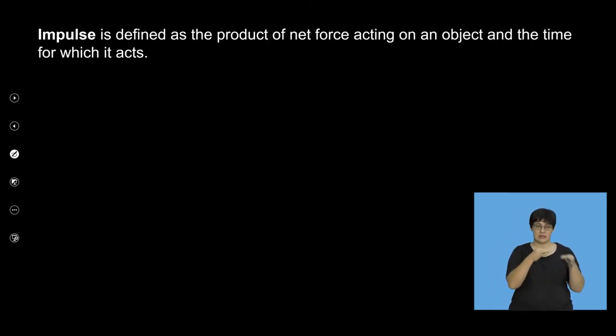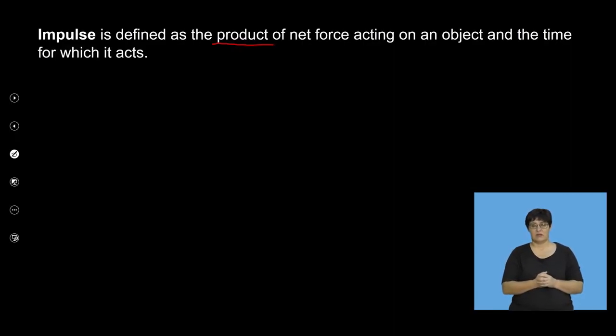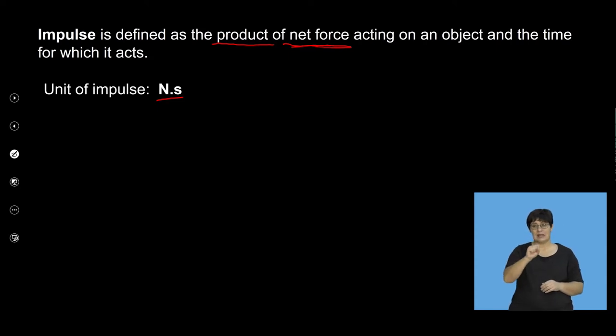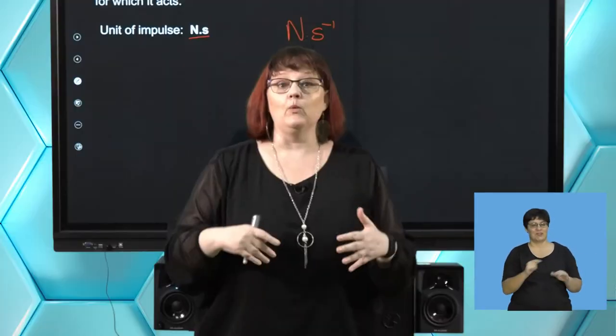Impulse is defined as the product. Please be careful with this definition — I often get told that impulse is F net and time. It's not just F net and time; it's the product, which means we multiply them together. This also means the net force gives me the direction. The unit of impulse is something new: it's Newton seconds, not Newton per second. When it's s to the minus one, you're dividing by time, but we're multiplying. Please be careful — it's easy to get wrong because you're not used to having seconds without a minus on it.